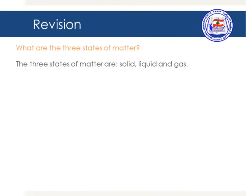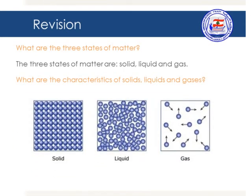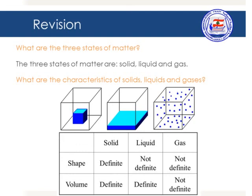What are the three states of matter? They are solid, liquid, and gas. As you can see in the picture in front of you, the particles in a solid are close to each other, the particles in a liquid are not so close, and the particles in a gas are far from each other. The shape and volume of a solid are both definite. The shape of a liquid is not definite — it takes the shape of the container — but its volume is definite. For a gas, both the shape and volume are indefinite, meaning it takes the shape and volume of the container.